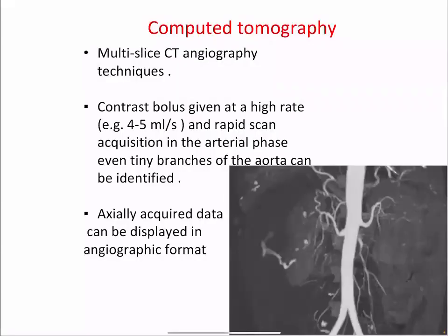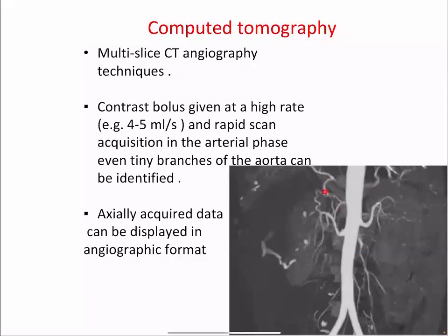Multi-slice CT angiography techniques use contrast given at a higher rate of about 4 to 5 mL/s, with rapid scan acquisition of the arterial phase so that even tiny branches of the aorta can be visualized. CT angiography shows the splenic, common hepatic, and its branches, the right and left renal arteries, and the regional branches of the superior mesenteric artery.